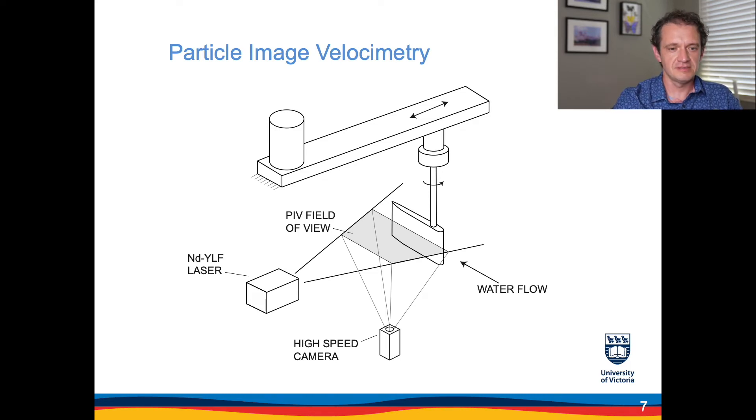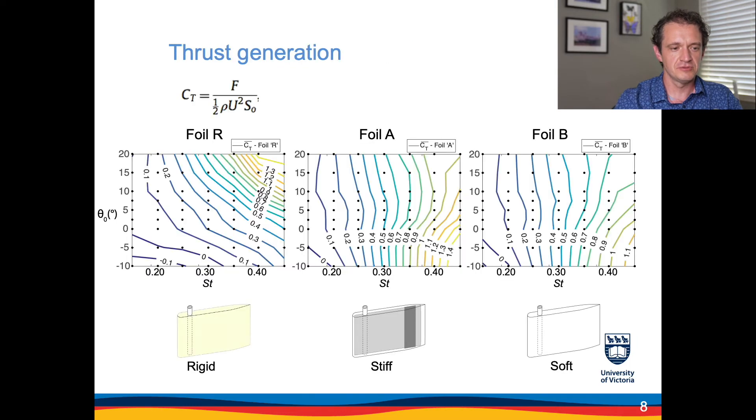So looking at the results, let's look at the flow induced forces first. In terms of thrust generation, this slide shows plots of the thrust coefficient which we define as the force in the streamwise direction normalized by dynamic pressure. It's plotted for the three foils: